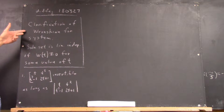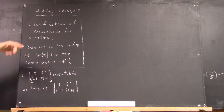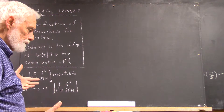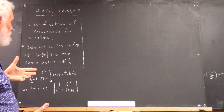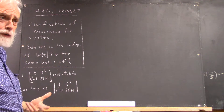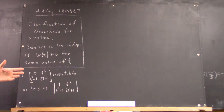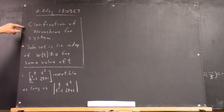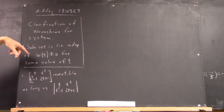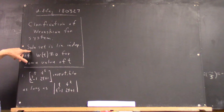First, a quick clarification. I said about the Wronskian last time — I had that Wronskian and it came out where it could never be zero. Well, anyhow, what I stated there wasn't quite right. I didn't have the right condition. I just wasn't thinking correctly and didn't think through it deeply enough.